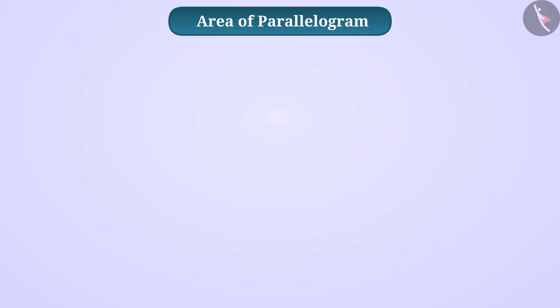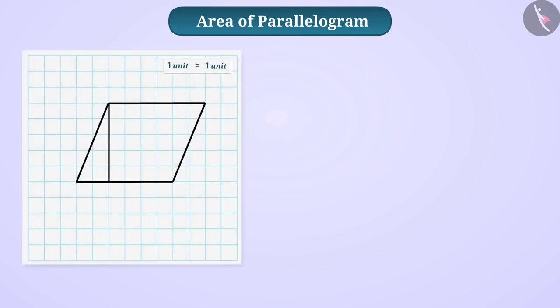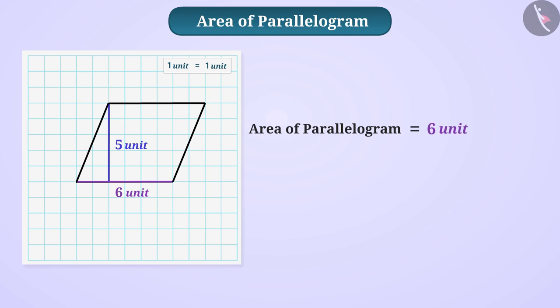Let's find out the area of the parallelogram shown. Here, length of base of parallelogram is 6 units and height of parallelogram is 5 units. Therefore, area of this parallelogram will be 6 units multiplied by 5 units, which is equal to 30 square units.